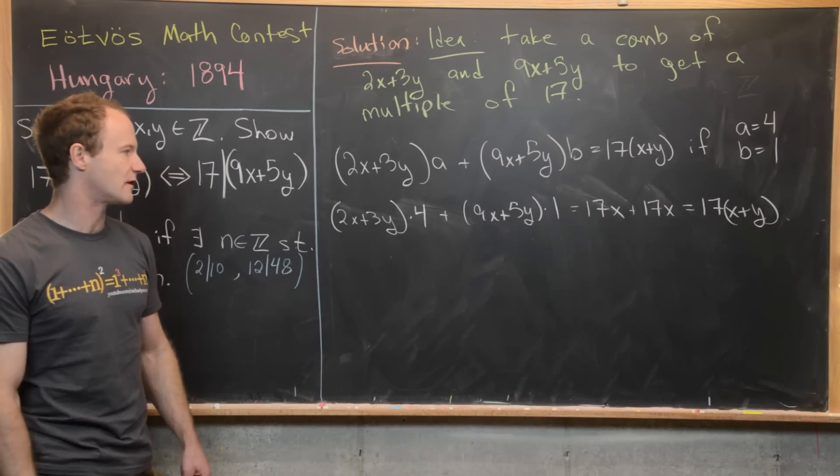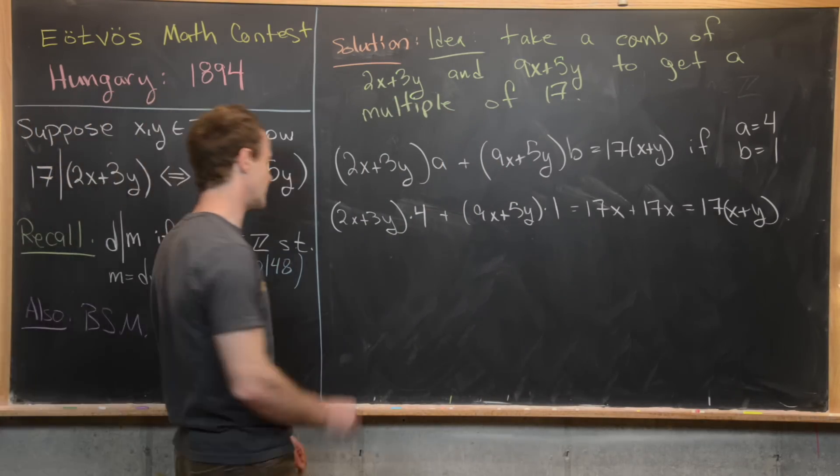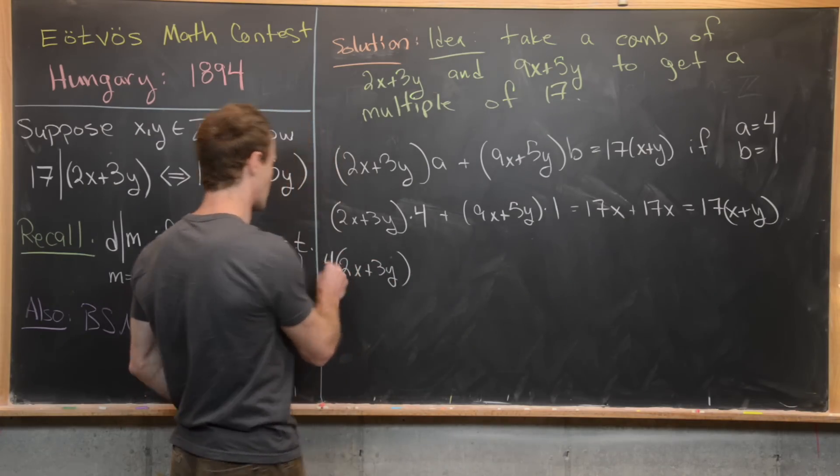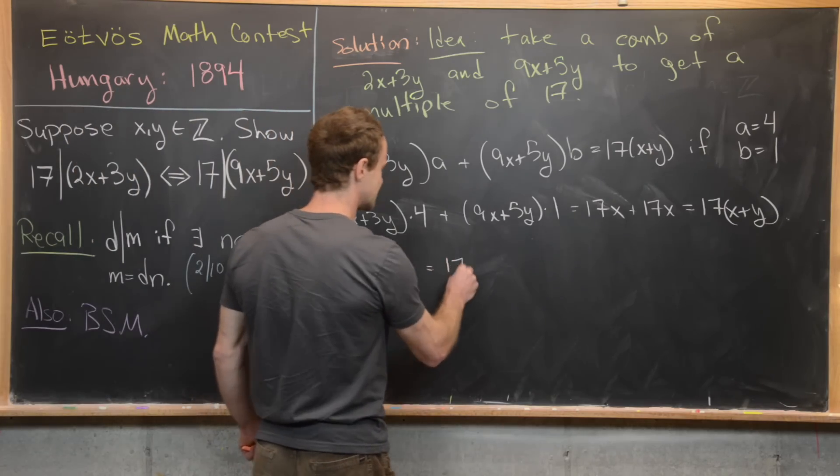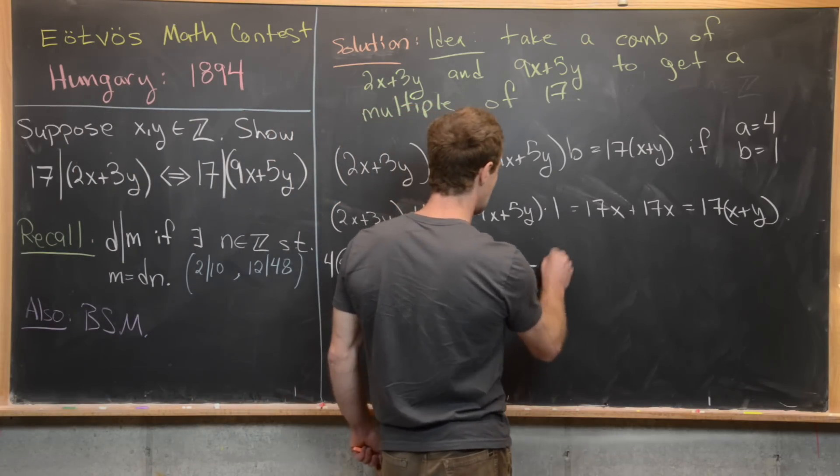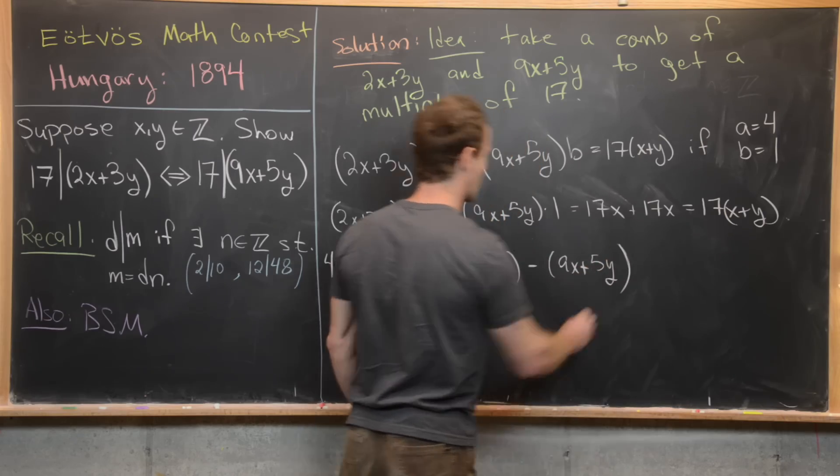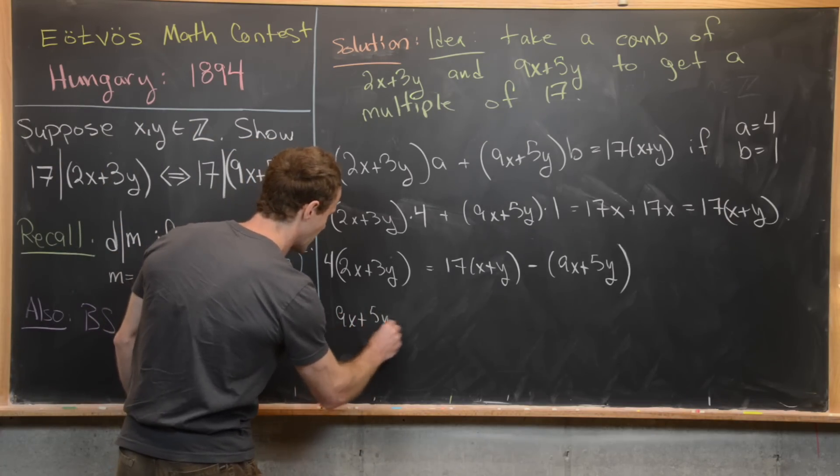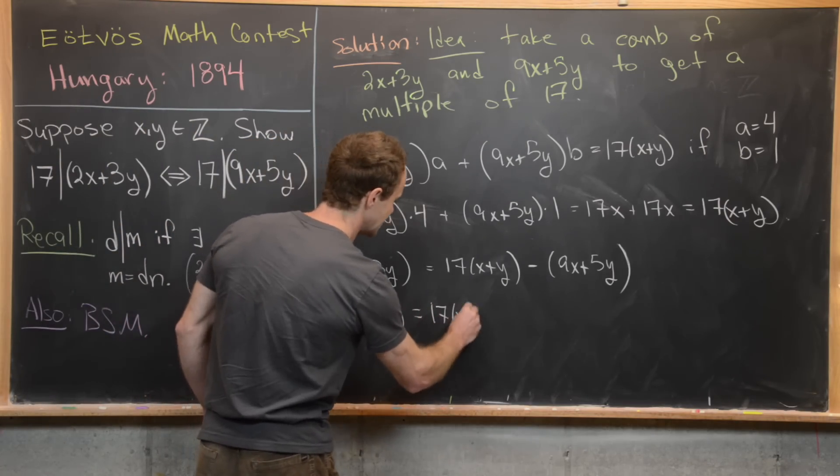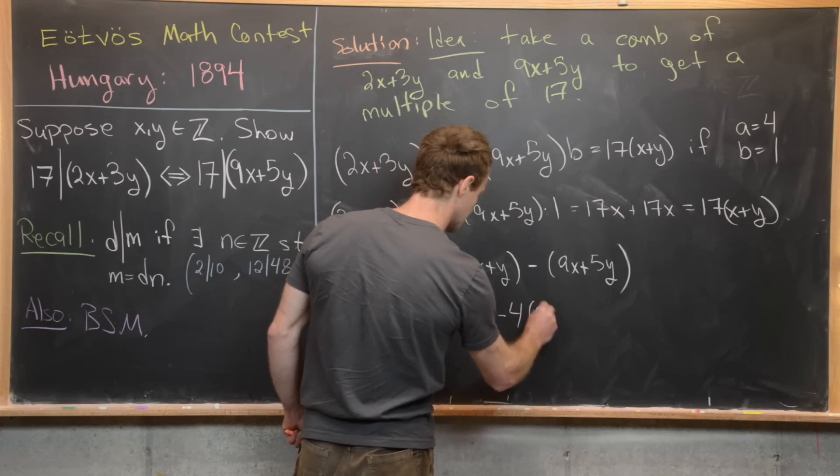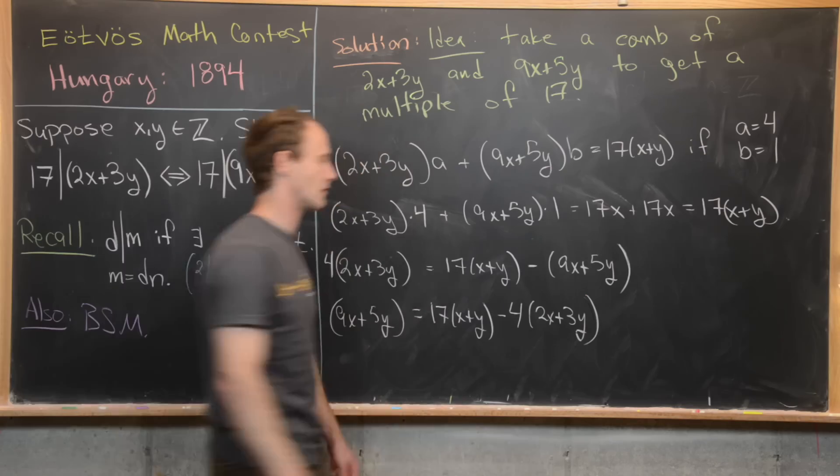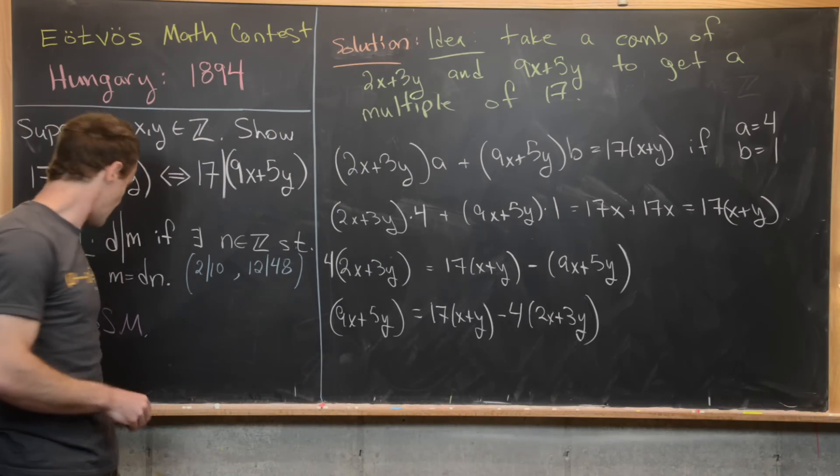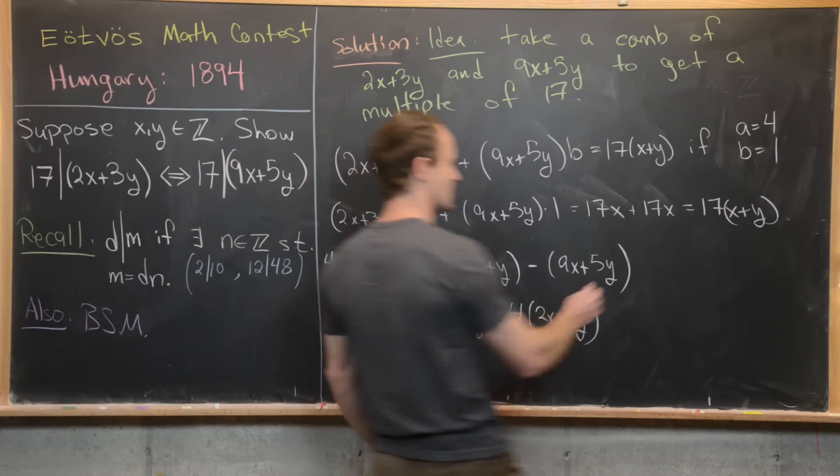Maybe we could rewrite this equation a couple of different ways. So let's maybe rewrite it this way. 2x plus 3y times 4, I write the four out front. That's equal to 17x plus 17y minus 9x plus 5y. Or likewise, we could write 9x plus 5y equals 17x plus 17y minus four times 2x plus 3y. Great. And now each of these can be used for one direction of this if and only if statement.